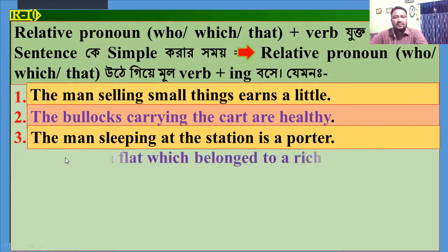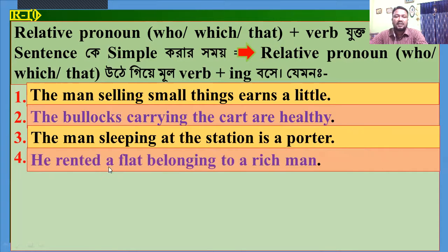Number 4: 'He rented a plot which belonged to a rich man.' Make it simple. Dear students, here 'which' is the relative pronoun and 'belong' is the principal part. So, the answer will be: 'He rented a plot belonging to a rich man.'